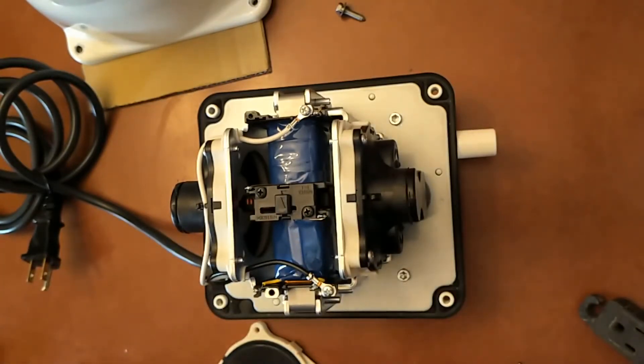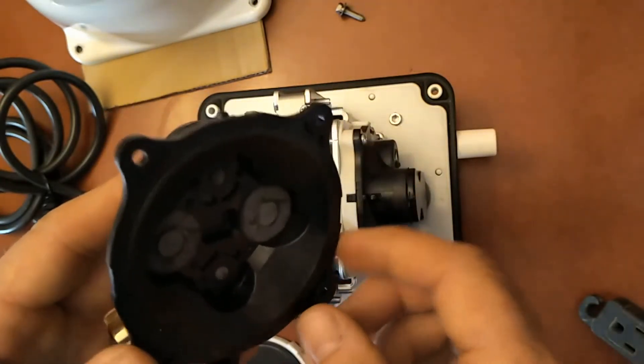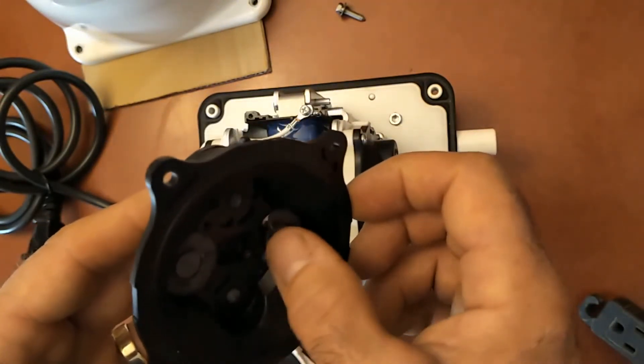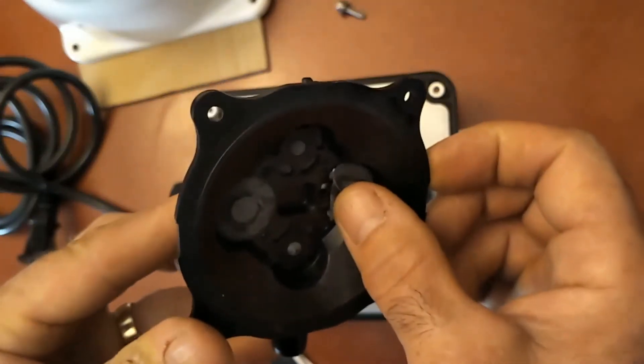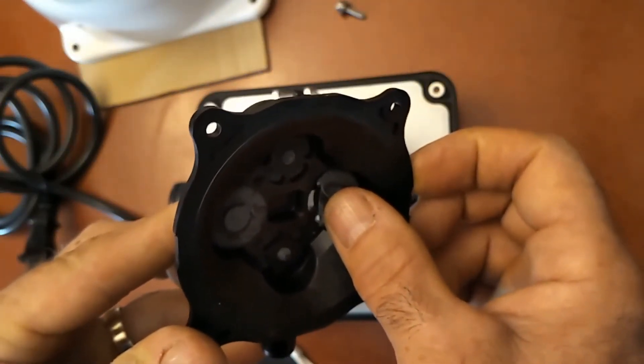The black part is what we call the chamber block. That's the valve system. It's just a very simple rubber disc that allows air in on the negative side of the stroke.